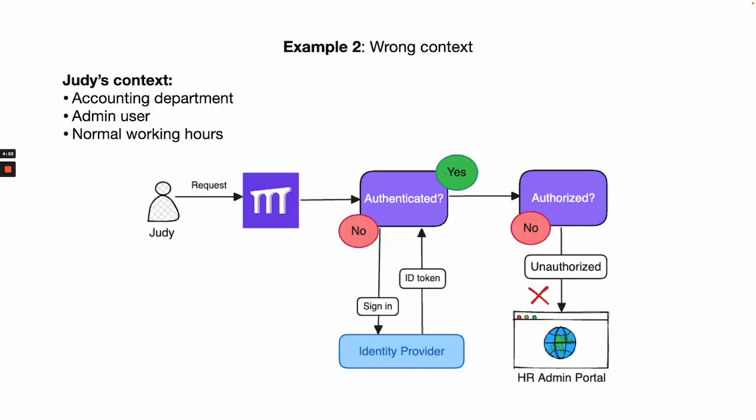Now say Judy tries to access an HR admin portal. Continuous verification could block that request because of Judy's context — she's not in HR, so she shouldn't have access to HR services.